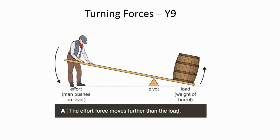If the distance between the person and the pivot, also known as the fulcrum, is greater than this distance here, and times by the effort is greater than this distance times by the weight of the barrel, then the person will be able to raise the barrel up into the air.